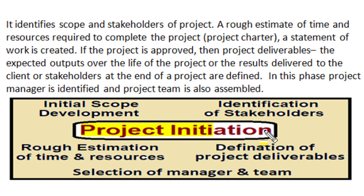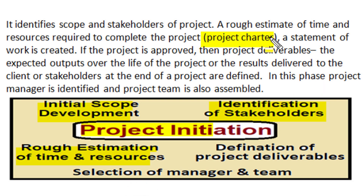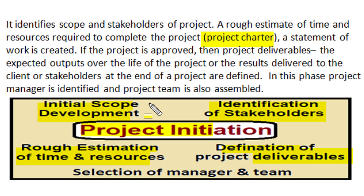In any project during the initial stage, the scope of the project is identified and prospective stakeholders to whom the project is designed are identified, and as per those stakeholders the project scope is developed. A rough estimation of time and resources to achieve the project goal is developed, and we popularly call it the project charter, which is basically a statement of all the works which a project has to perform. The project charter is approved by stakeholders, then project deliverables — the expected output over the life of successful completion of projects — are defined. The results to be delivered to the client or stakeholder at the end of the project are identified, and the project manager is selected and tentatively the project team is also formed.